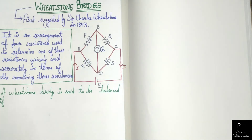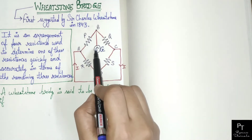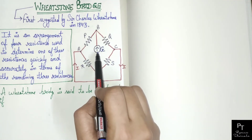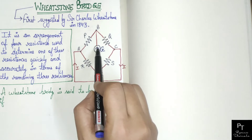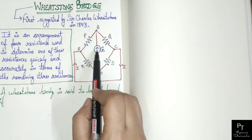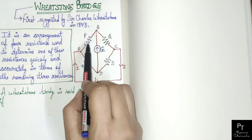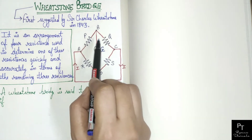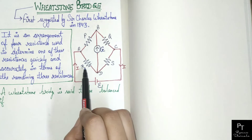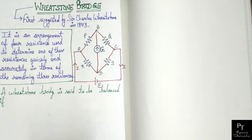The balance of the Wheatstone Bridge is when the potential difference across the Galvanometer is 0, meaning no current flows through the Galvanometer, and hence no deflection will happen in it. When this happens, the bridge is in balanced condition. Then the ratio of P to Q will be equal to the ratio of R to S resistances. This is the principle of Wheatstone Bridge.